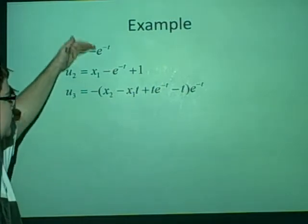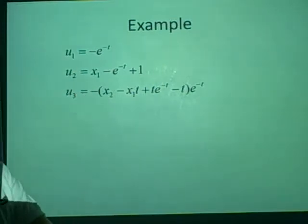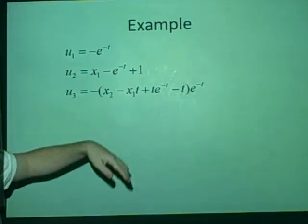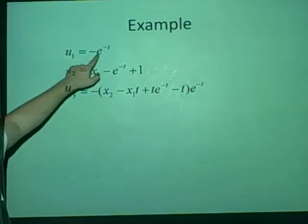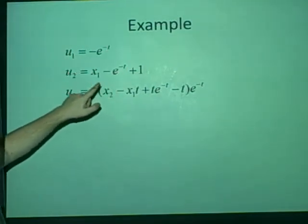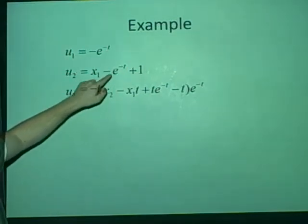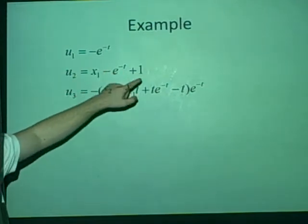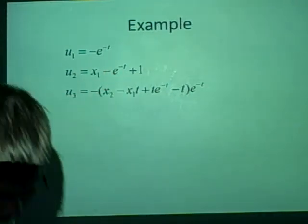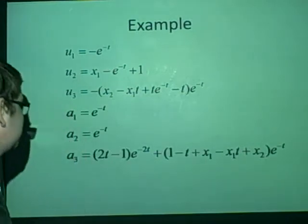There we go. And then we know the acceleration is just the differentiation of this. So we differentiate u1, give us e to the minus t, differentiate this, that cancels, give us e to the minus t, and that cancels as well. So that's easy.